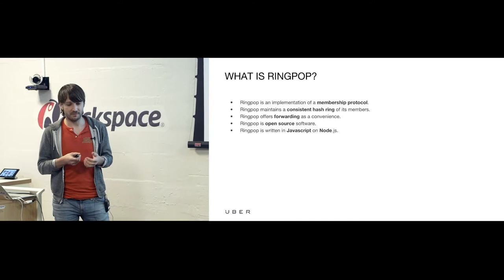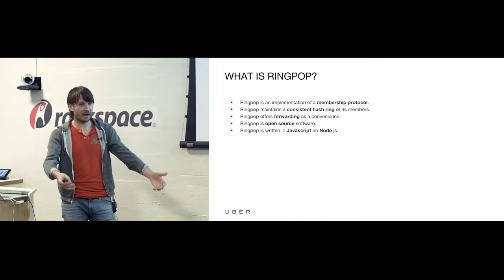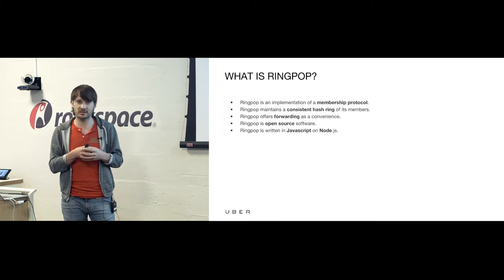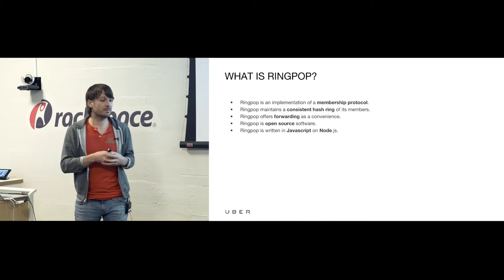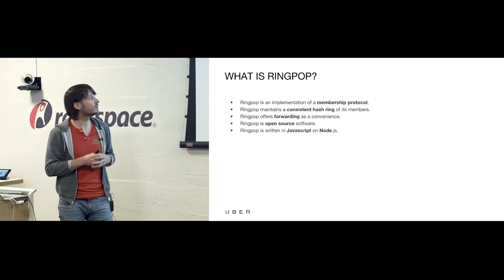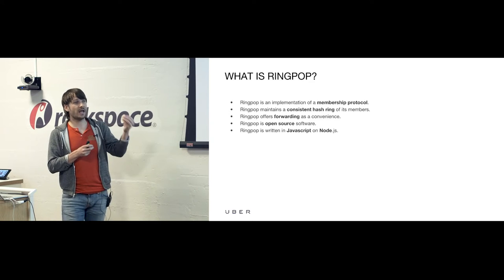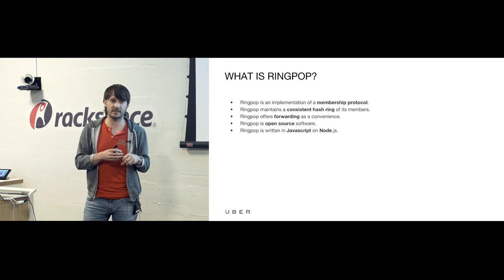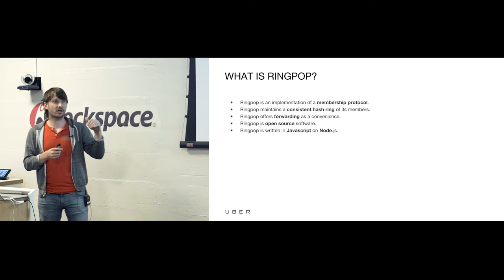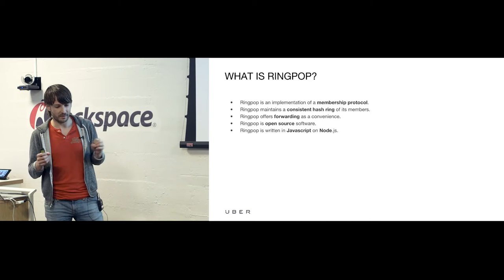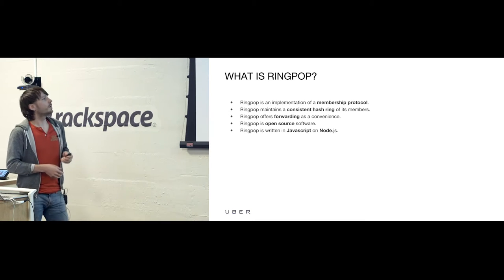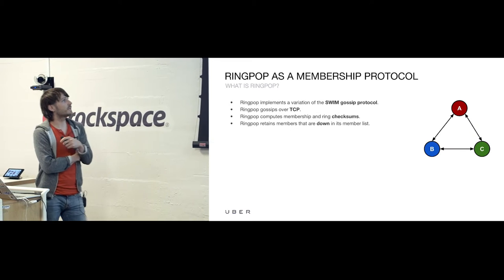RingPop also offers forwarding as a convenience. As your application receives traffic directed toward a particular entity with an ID, that ID has a home somewhere in your cluster on a particular instance depending on how it hashes. If the key hashes to an instance that is not the one that received the request, that request is simply forwarded — all of that is handled under the hood, acting as a middleware layer in the applications we build, rather than requiring a lot of friction for the developer.